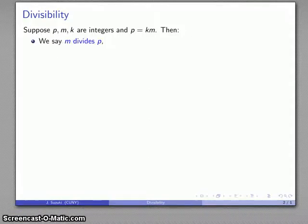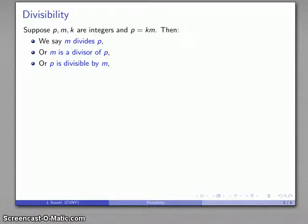Suppose I have P, M, and K, all integers, and suppose I know that P is equal to K times M. Then, I say one of several things. First of all, I say that M divides P. We also might say that M is a divisor of P.